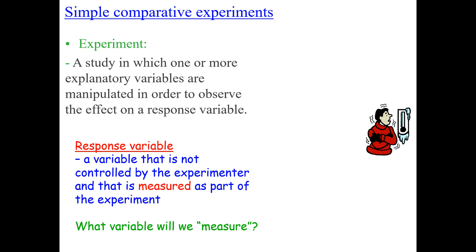An experiment is a study in which one or more explanatory variables are manipulated in order to observe the effect on a response variable. A response variable is a variable that is not controlled by the experimenter and that is measured as part of the experiment.